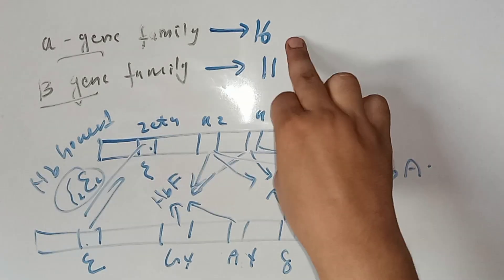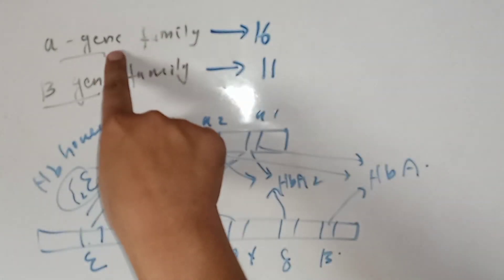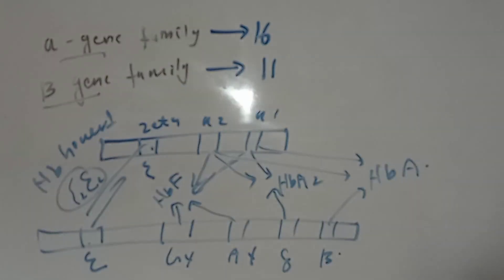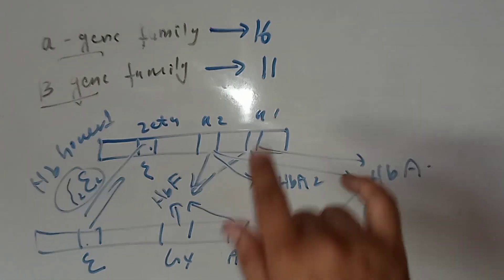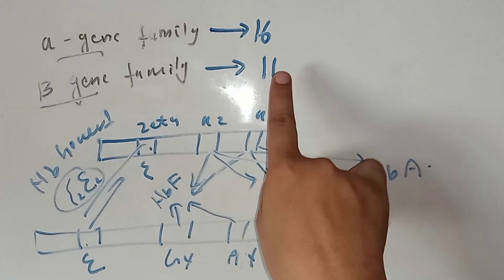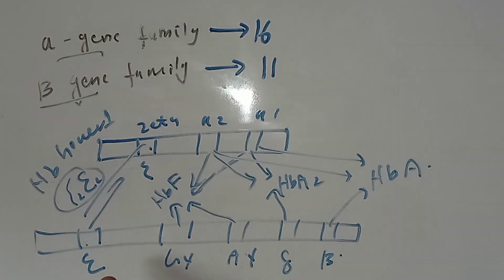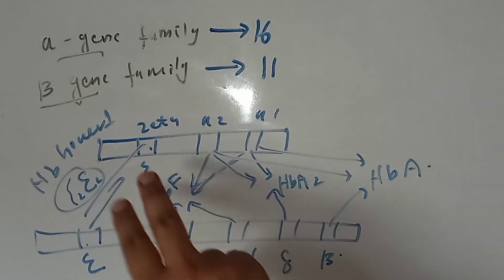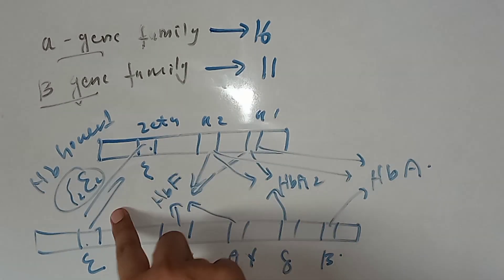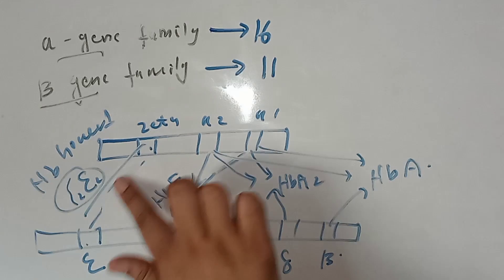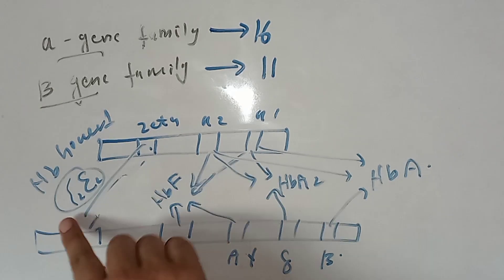On chromosome number 16, the alpha gene family includes the zeta gene, alpha 2, and alpha 1 genes. On chromosome number 11, the beta gene family includes the epsilon gene, G-gamma, A-gamma, delta gene, and beta gene. Products of the zeta and epsilon genes are expressed in early embryonic life and produce Hb Gower 1.